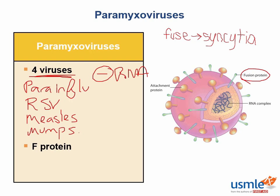This is why RSV is called respiratory syncytial virus. If we remember that RSV is a paramyxovirus, we can remember that all paramyxoviruses form syncytia — multinucleated fusions of cells that form because of this unique F or fusion protein.